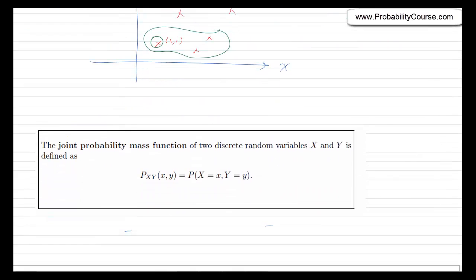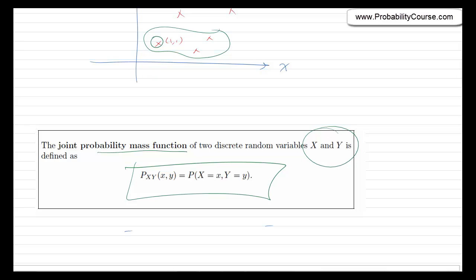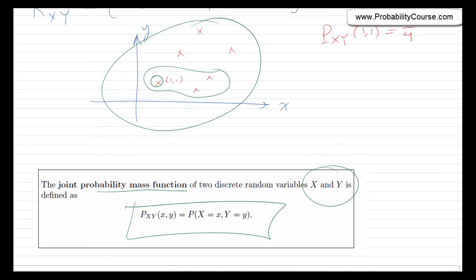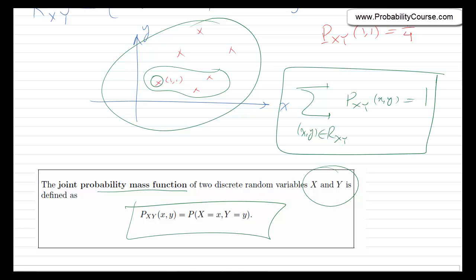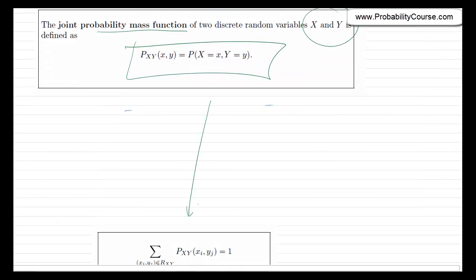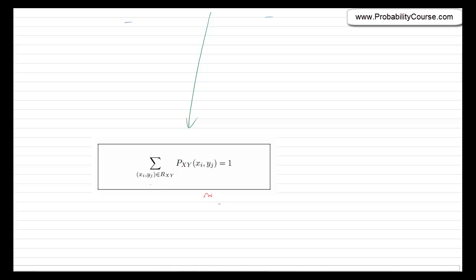To summarize, the joint probability mass function of two discrete random variables x and y is defined as shown. Any probability we want for these two random variables should be calculable from the joint PMF. Note that if I add all the probabilities of points in the range, I should get 1. So summing p_xy(x, y) over all (x, y) in the range must equal 1.